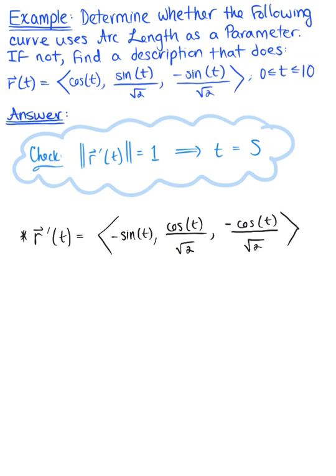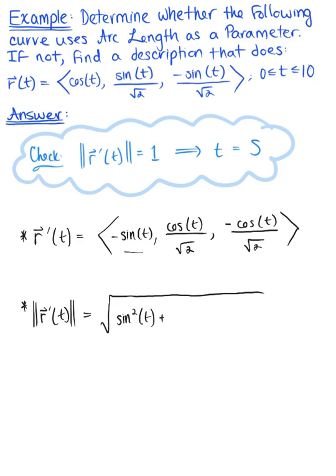We have no scalar multiples, so we go right for our magnitude. Let's find the length of our tangent vector. Using the distance formula, we have the square root of: negative sine of t squared, which gives sine of t squared, plus cosine of t divided by the square root of 2 squared, which gives cosine of t squared over 2, plus minus cosine of t divided by the square root of 2 squared, which again gives cosine of t squared divided by 2.